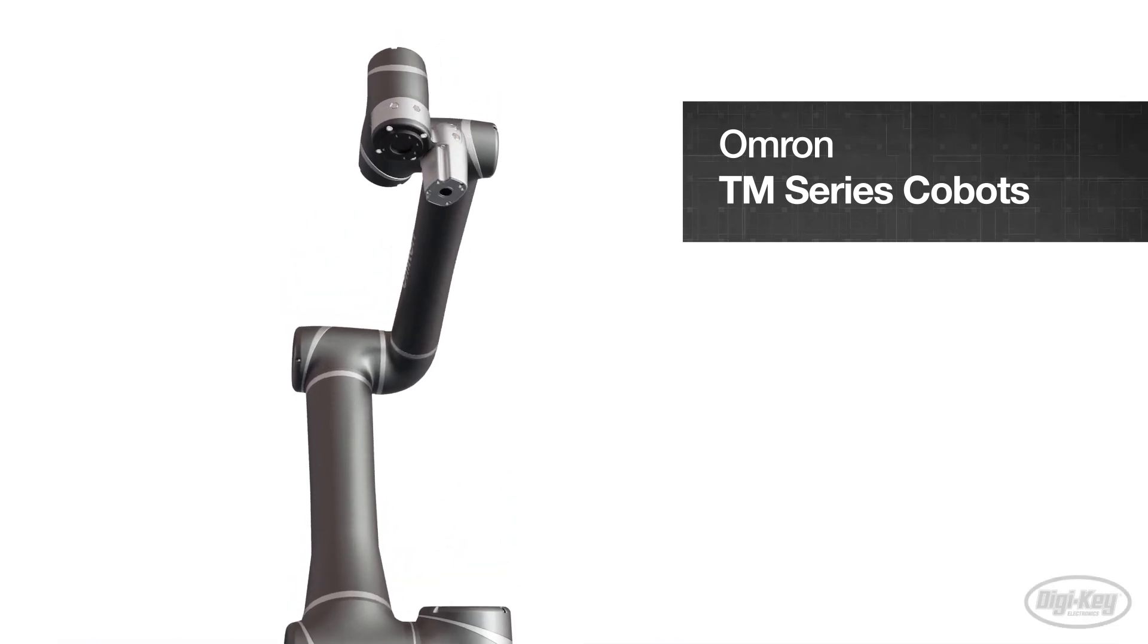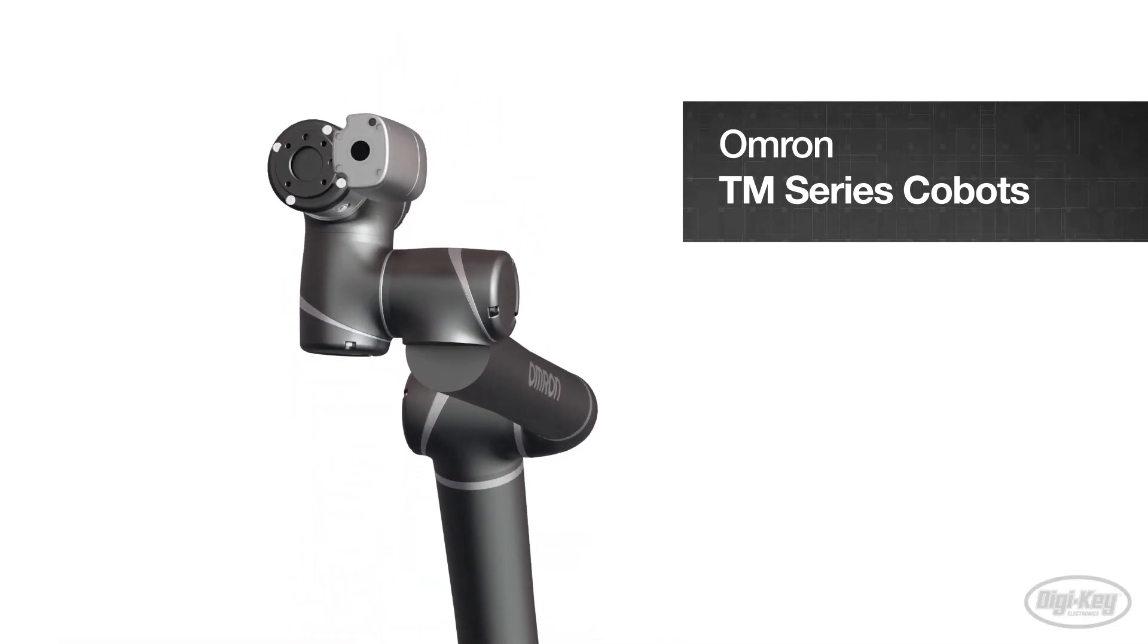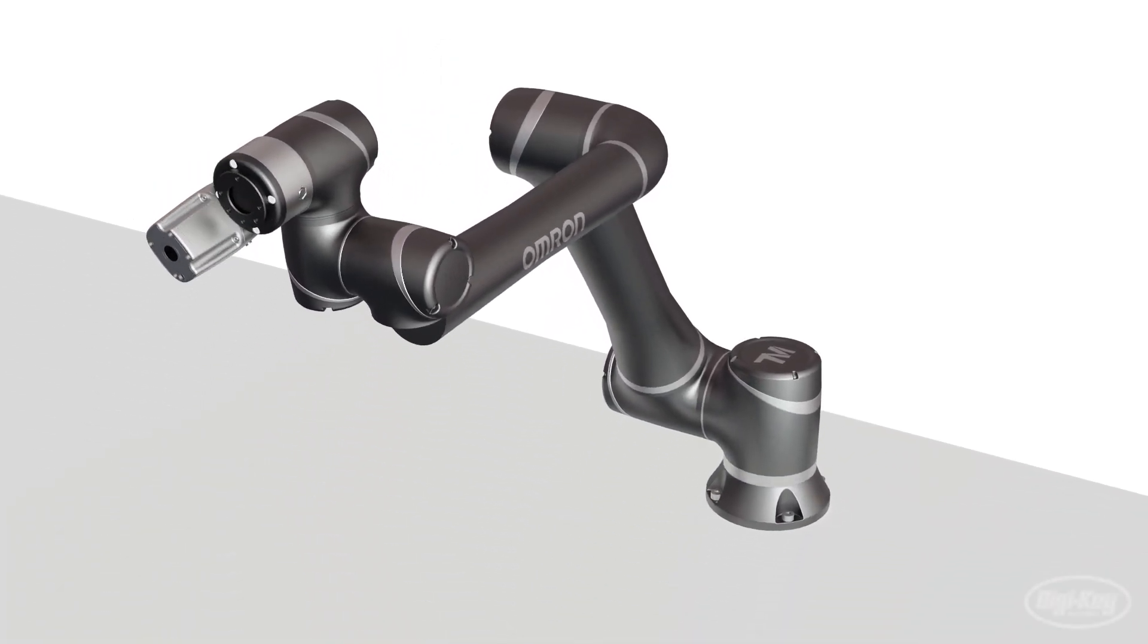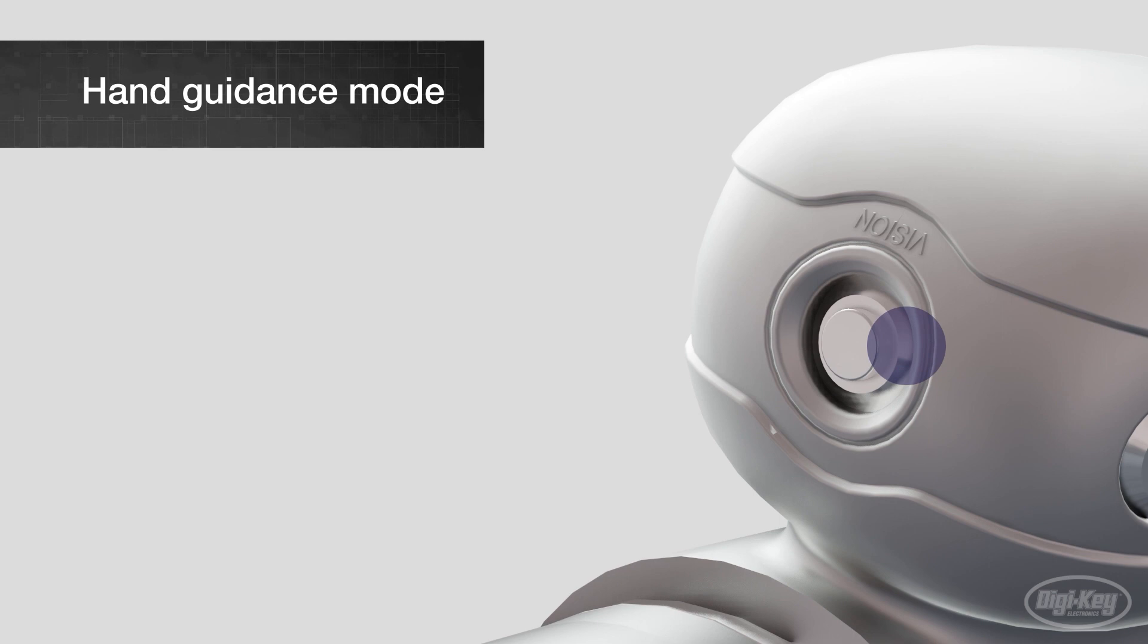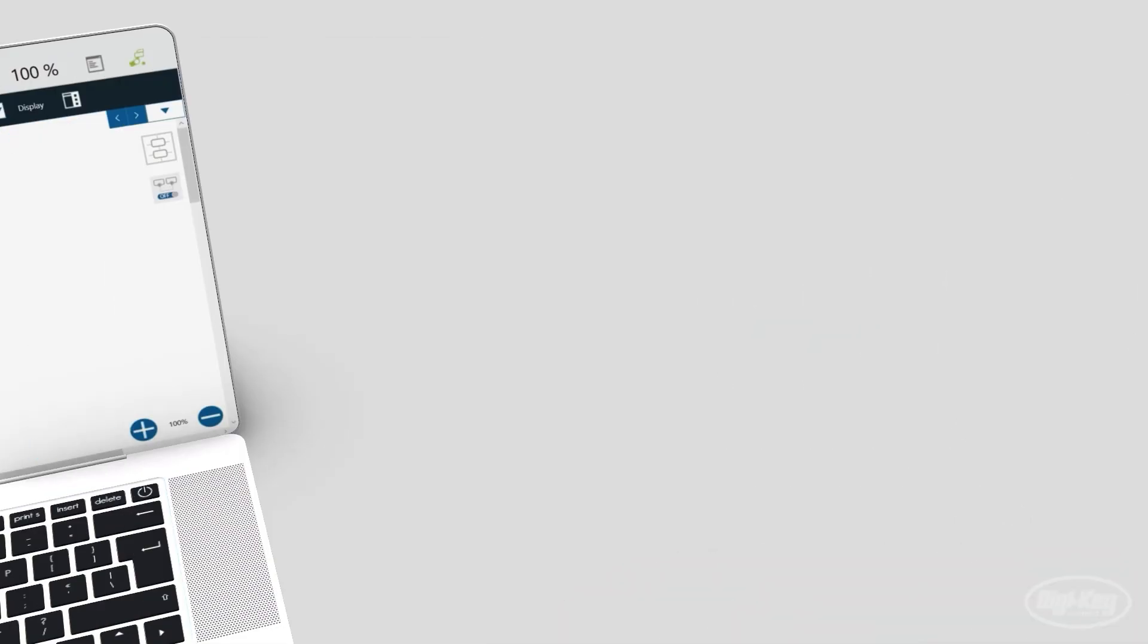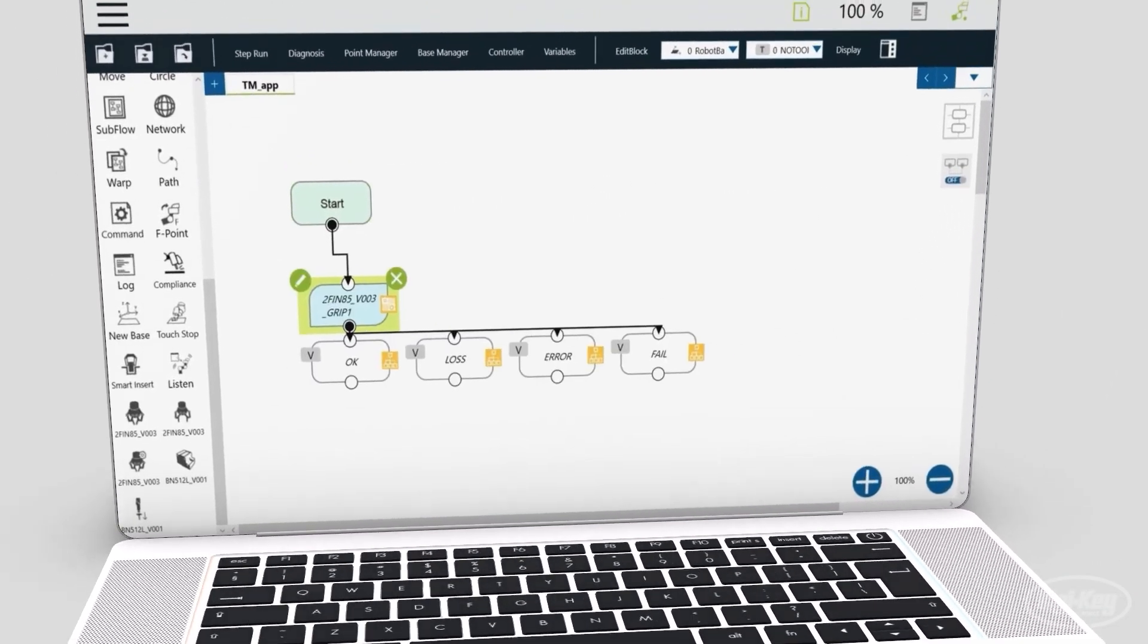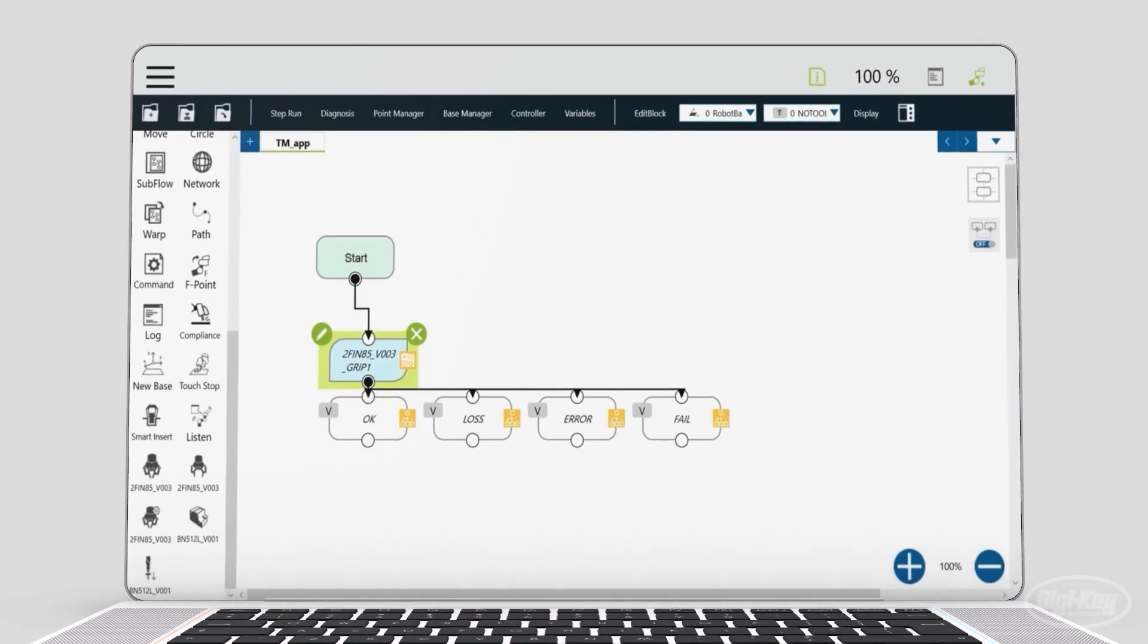Omron's TM series of co-bots makes automating these processes easy. Hand Guidance mode allows users to set points and assign tasks using buttons on the co-bot arm without any programming, while an intuitive graphical programming interface can be used to create full workflows with minimal training.